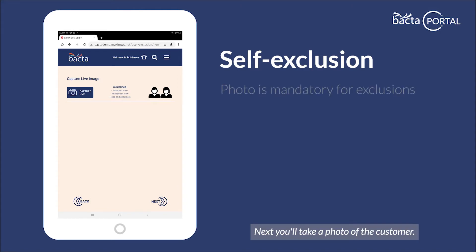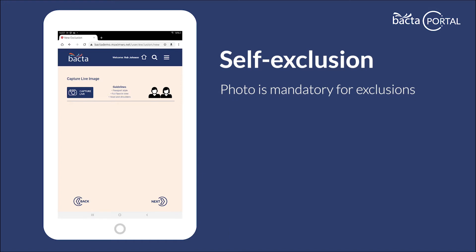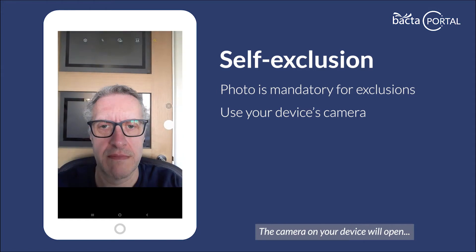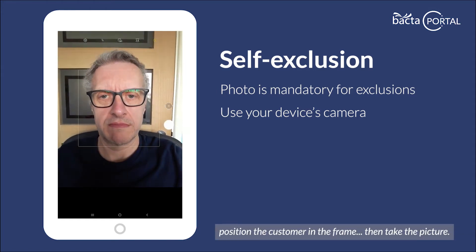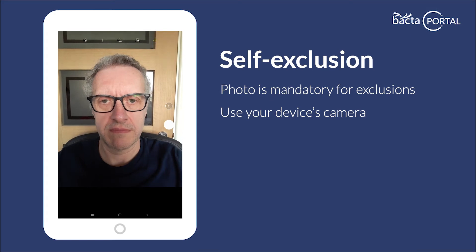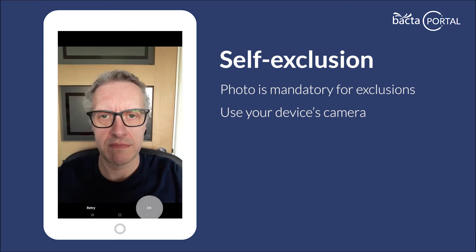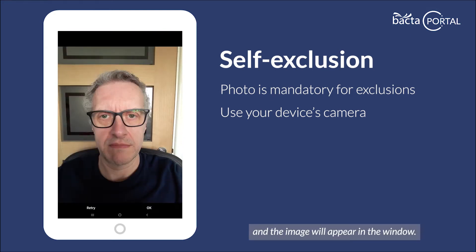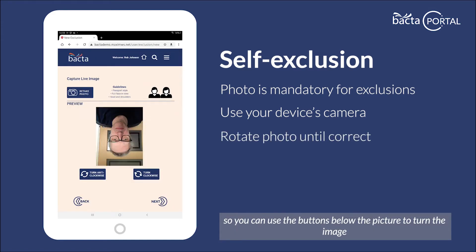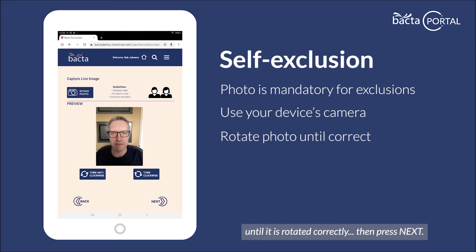Next, you'll take a photo of the customer. This is mandatory and there is no option for icons. First of all, click the capture live button. The camera on your device will open. Position the customer in the frame and take the picture. Click OK and the image will appear in the window. On some devices it will rotate the image, so you can use the buttons below the picture to turn the image until it is rotated correctly, then press next.